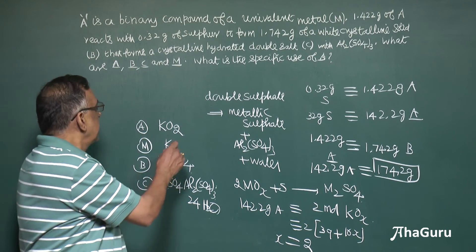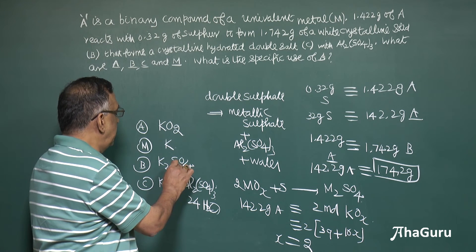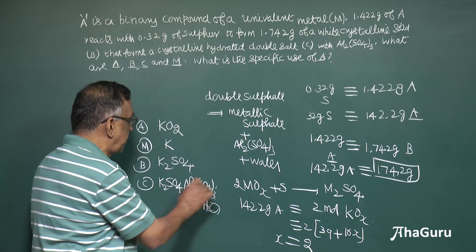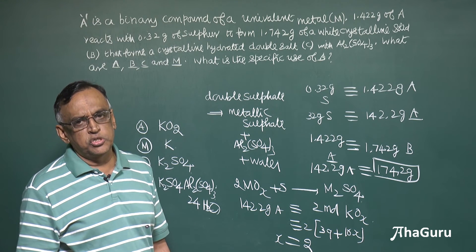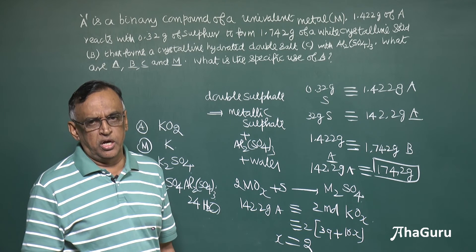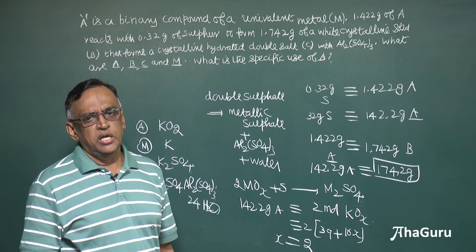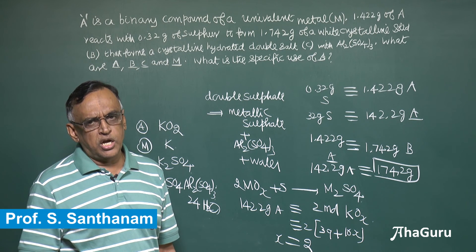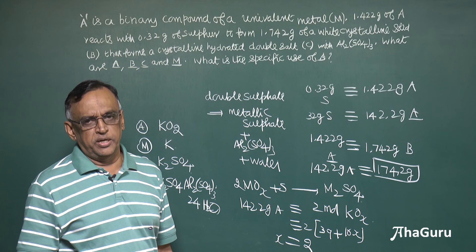So the metal is potassium, the binary compound A is potassium superoxide (KO₂), B is potassium sulfate (K₂SO₄), and C is potassium alum. The specific use of potassium superoxide is for supplying oxygen, particularly for people working on submarines and spaceships, where carbon dioxide is present in larger amounts. KO₂ removes carbon dioxide from that atmosphere, forming K₂CO₃ and releasing oxygen, so that the available oxygen helps them breathe properly.